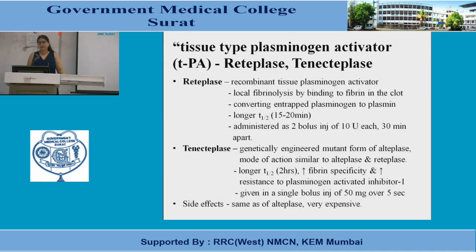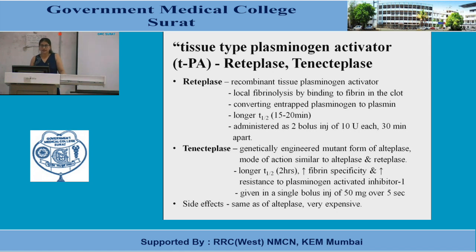Reteplase is a recombinant tissue plasminogen activator that causes local fibrinolysis by binding to fibrin in the clot and converting entrapped plasminogen to plasmin. Its half-life is 15–20 minutes and it is administered as two bolus injections of 10 units each, 30 minutes apart. Tenecteplase is a genetically engineered mutant form of alteplase with a similar mode of action but a considerably longer half-life of two hours, greater fibrin specificity, and more resistance to plasminogen activator inhibitor-1. It is given as a single bolus injection of 50 mg over 5 seconds. Side effects are the same as alteplase and it is also expensive.